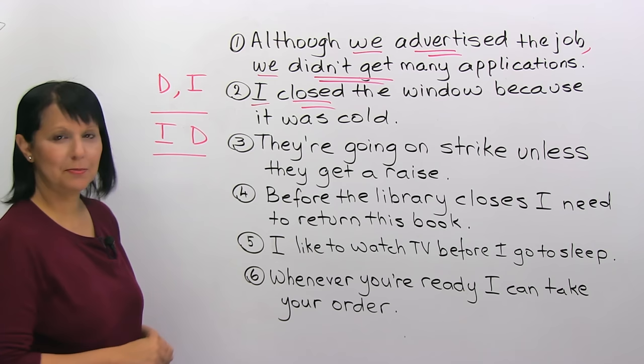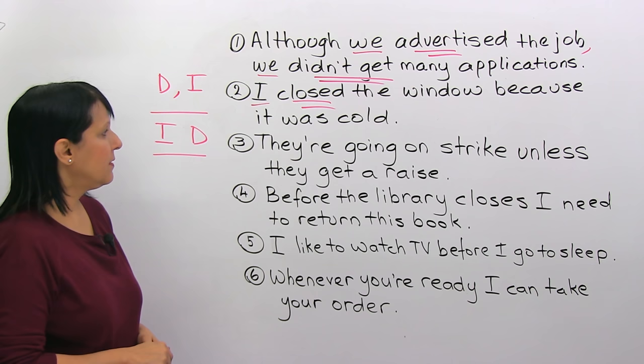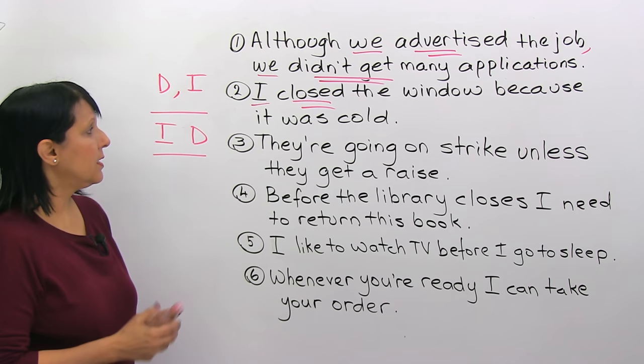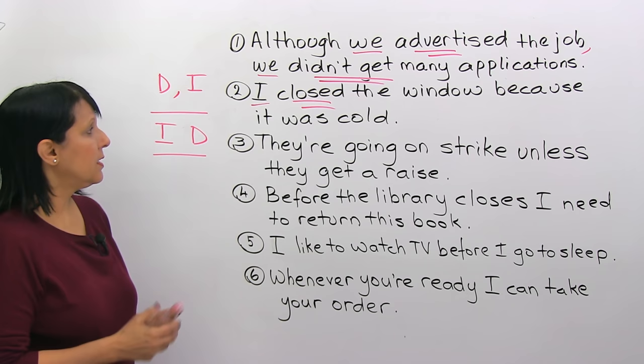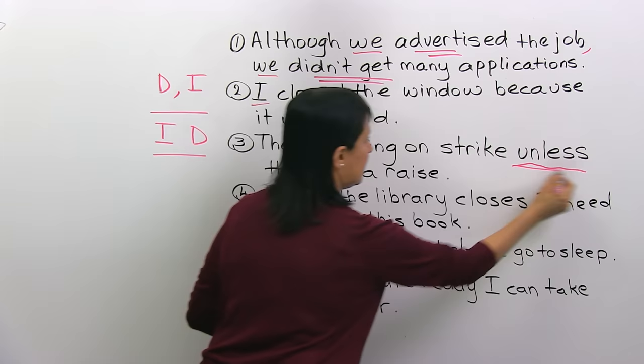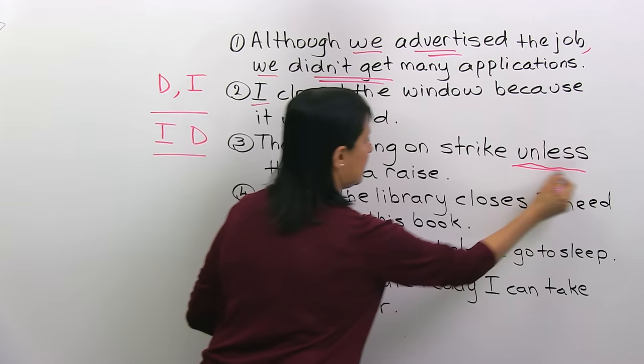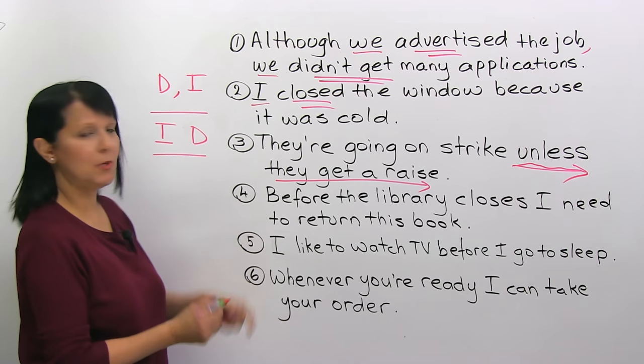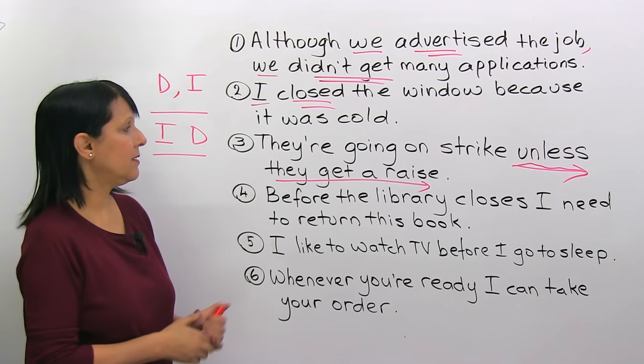Number three: 'They're going on strike unless they get a raise.' Where is the subordinating conjunction? It's 'unless.' The part after 'unless' is the dependent clause, and it is in the second position. So when the dependent clause comes second, we don't need a comma. The sentence is fine as it is: 'They're going on strike unless they get a raise.'